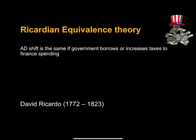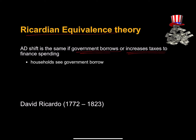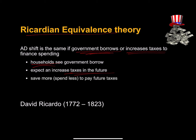Another reason why fiscal policy might not be as effective as we'd like is Ricardian equivalence. The government borrows to finance deficit spending. If it doesn't borrow, it has to increase taxes — and an increase in taxes is also going to result in a decline in aggregate demand. If we are rational and the government borrows to finance spending, households see that and anticipate higher taxes in the future. If they anticipate higher taxes, they're going to save more and spend less, resulting in a decline in aggregate demand.